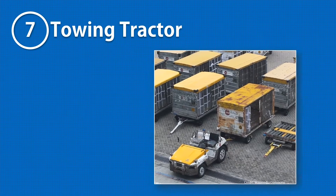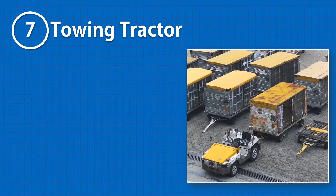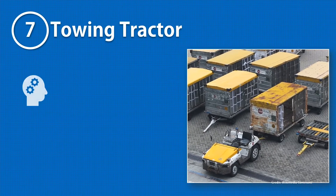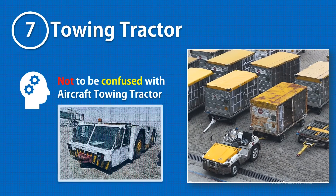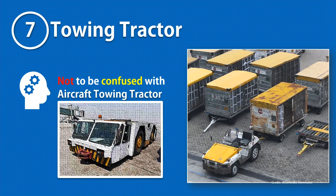The baggage cart is towed by a towing tractor. This is not the same as the pushback tractor, but it's a smaller version. It is a commonly used vehicle on the ramp for towing other ground support equipment.